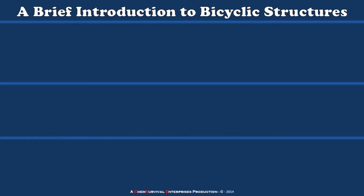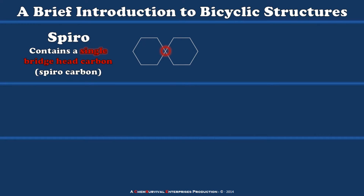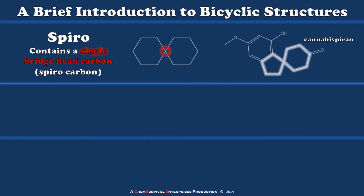So there are three different classes of bicyclic structures that we talk about. The first of these is spiro, and they're categorized by having a single bridgehead carbon — a single carbon which holds those two rings together. An example of a compound that you might find in nature with this motif is cannabispiron, which is from the cannabis plant, and there is our spiro motif right there: two rings sharing a single atom in common.